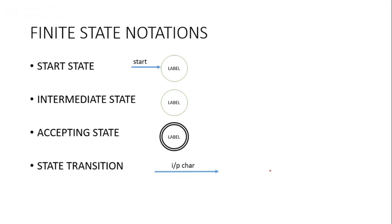Next, finite state notations. To write any finite state automata we need to know these notations. First is the start state: an arrow towards a circle, and the circle needs to be labeled — you can use any alphabet, like q-naught, q1, or numbers. An intermediate state is just a circle with a label. An accepting state needs to be double-circled. State transition — the movement from one state to another — is represented with an arrow, labeled with an input character.